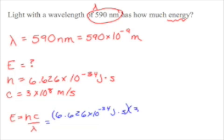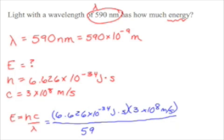And then we're going to multiply by c, which is the speed of light, which is 3 times 10 to the 8th meters per second. And we're going to divide all that by lambda. And we know that lambda is 590 times 10 to the negative 9th meters. So we're going to divide by 590 times 10 to the negative 9th meters. And let's put this in parentheses so we remember we used parentheses in our calculator.